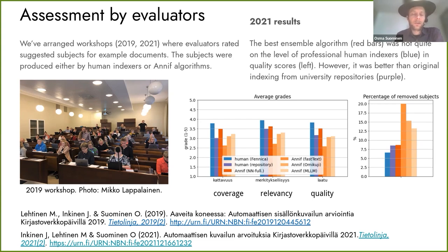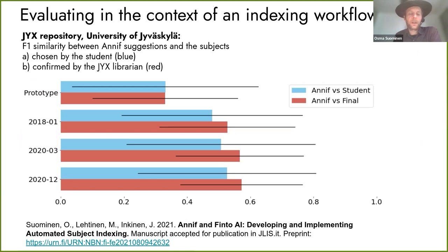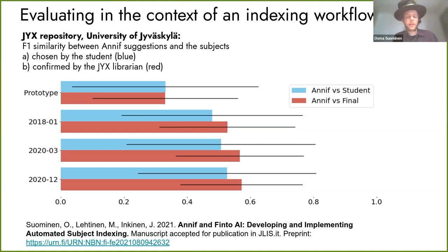We have published two articles about these results, though both are in Finnish. Since ANIF has been used in production for some time, we have also measured how many ANIF-suggested subjects are selected into the final metadata by human indexers. The JYX repository of the University of Jyväskylä started using the ANIF prototype early on — at that time around one third of suggestions were accepted. With the new implementation using better algorithms, this increased to one half, and with successive updates the proportion of accepted subjects has continued to increase.